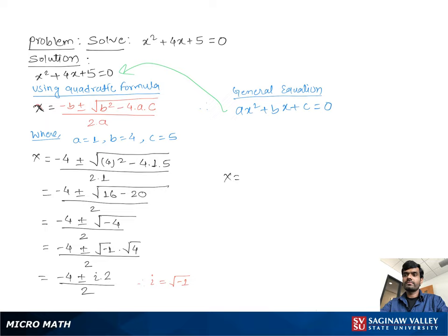Then we can write x equal to negative 4 plus minus 2i over 2. Then x is equal to negative 2 plus minus i, giving us two solutions: x equals negative 2 plus i, or x equals negative 2 minus i. These are the two solutions for the given equation.